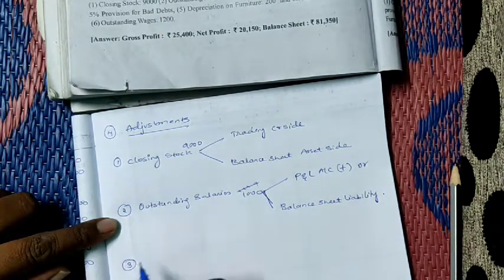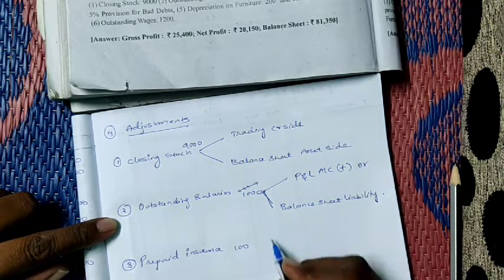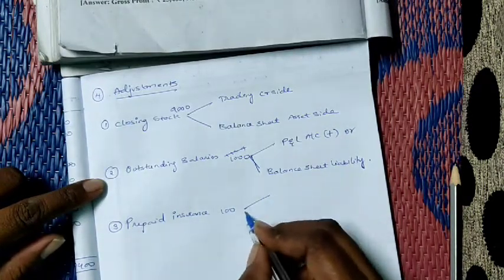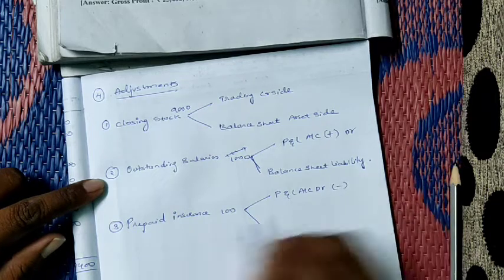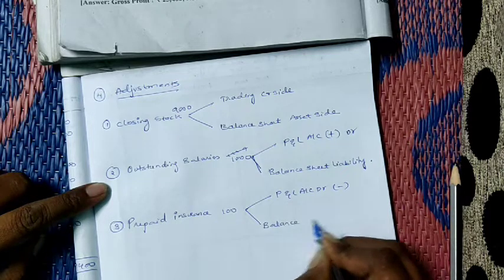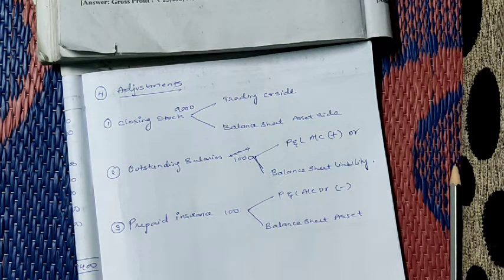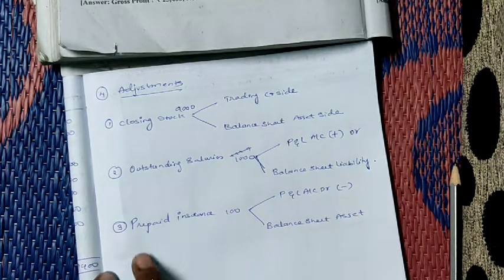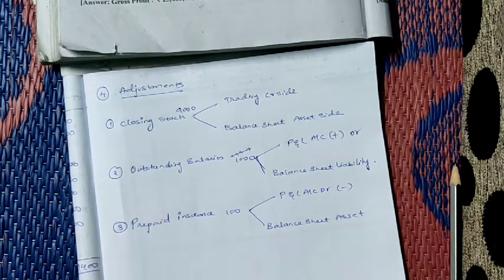Third adjustment: prepaid insurance — nothing but prepaid expenses. Prepaid insurance is 100. First we have to take it in P&L account debit side and deduct it from insurance. Next time it will appear in balance sheet, asset side. Same adjustments I am explaining in past questions also, so again in this question we have the same adjustments.